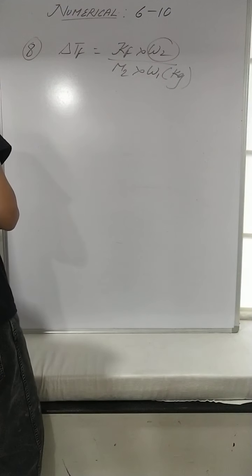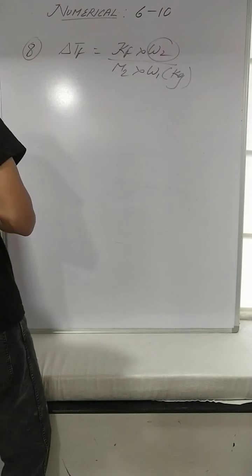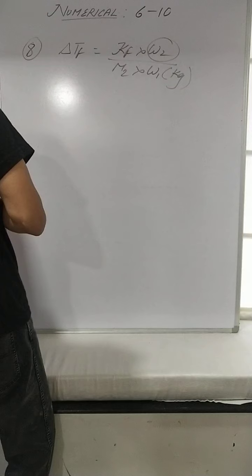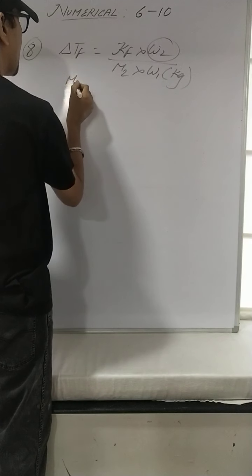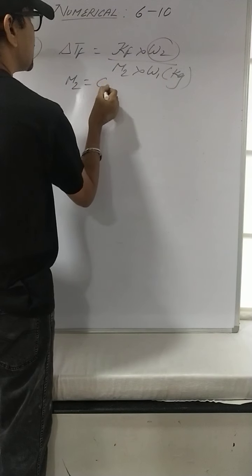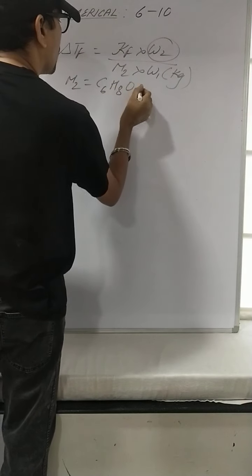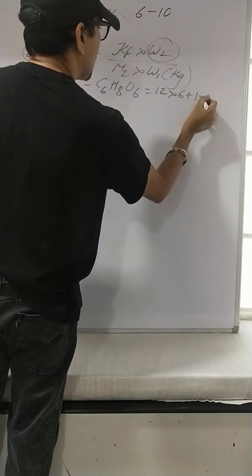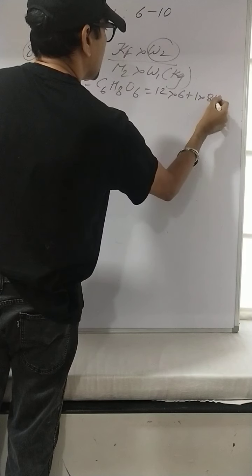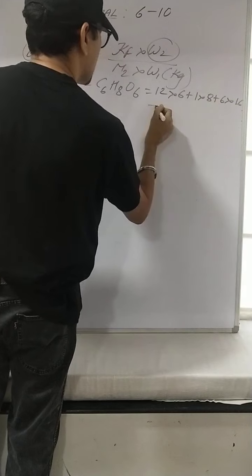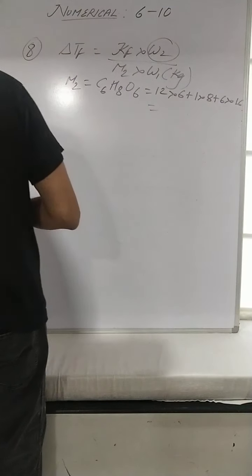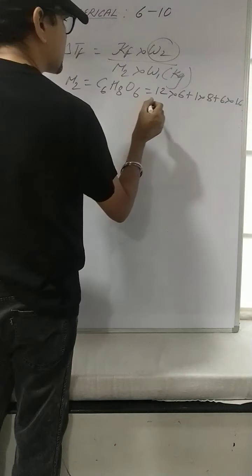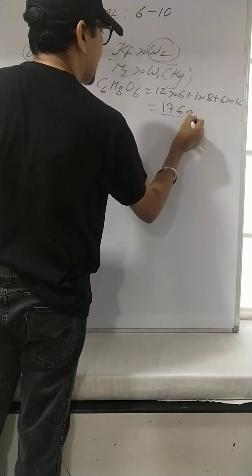Ascorbic acid formula is C6H8O6. So M2 = 12×6 + 1×8 + 16×6 = 72 + 8 + 96 = 176 grams/mol. Data: Delta Tf = 1.5, Kf = 3.9, W1 = 75 grams (convert to 0.075 kg or use ×1000). W2 = (1.5 × 176 × 75) / (3.9 × 1000).